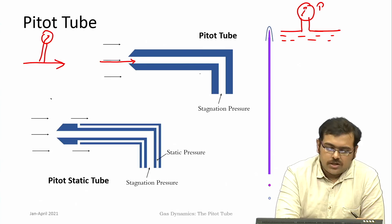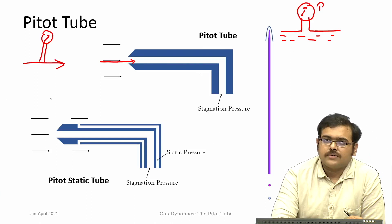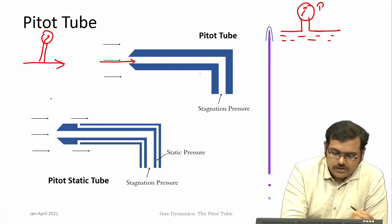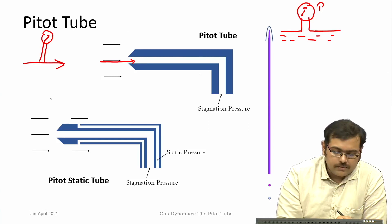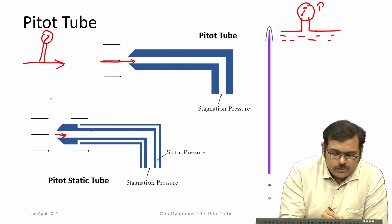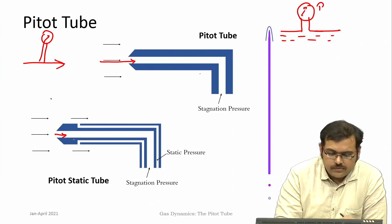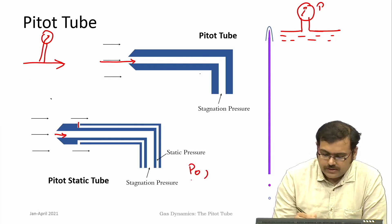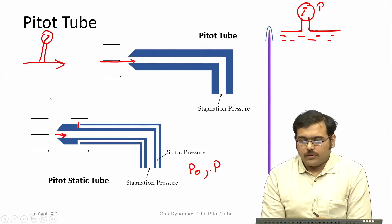Just knowing the stagnation pressure is not sufficient to convert that into velocity, which is our final interest — to know either velocity or Mach number at that particular point. You also need information on the static pressure. Often this is done using a pitot-static tube, which has two ports: the central port is normal to the flow and measures stagnation pressure, while holes around the periphery measure static pressure parallel to the flow.